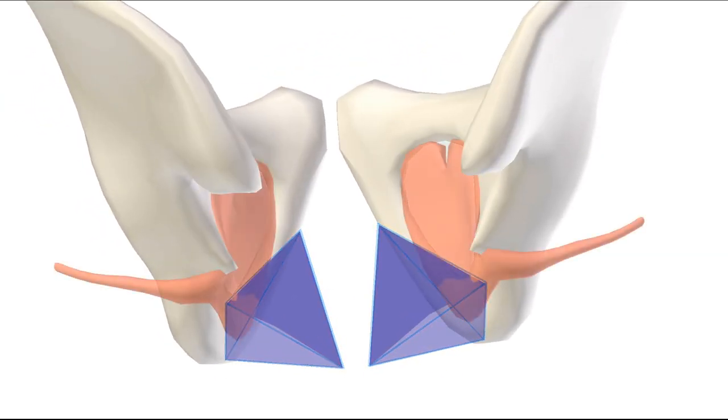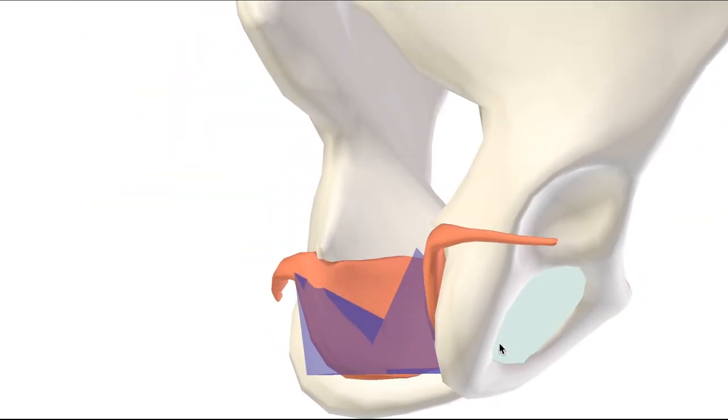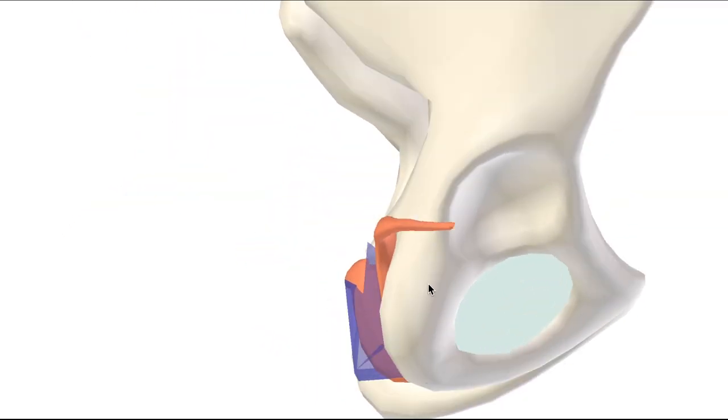Let's bring in the lateral wall now, which is the obturator internus muscle, as well as part of the ischium, which is this part of the pubic bone.